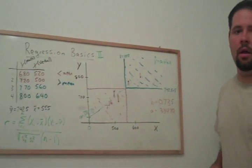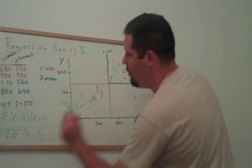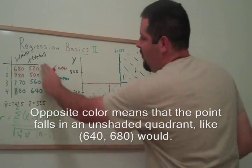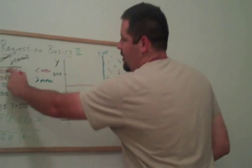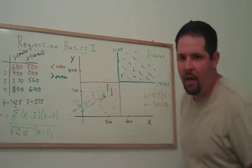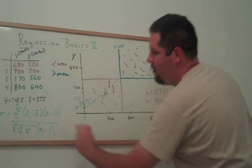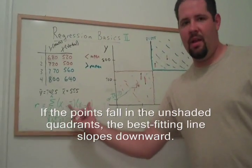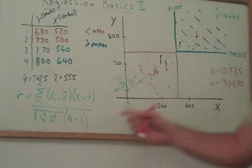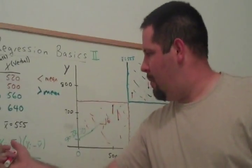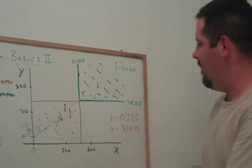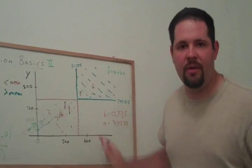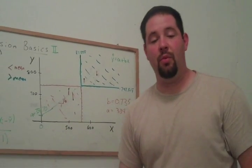If they were opposite color, for example, if x were 640 here and 520 there, this would be an opposite color than that. That would mean we would be multiplying a negative number with a positive number, and that would cause a negative contribution to this sum. Therefore, if we have more observations that are opposite color—more observations lying in this quadrant and this quadrant—we get a negative relationship between the two variables.